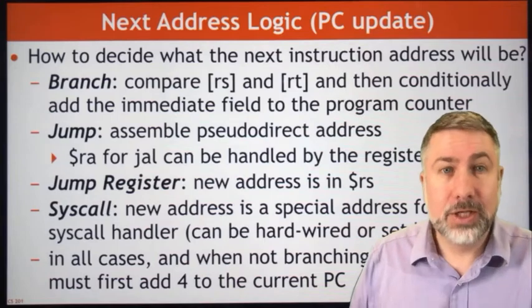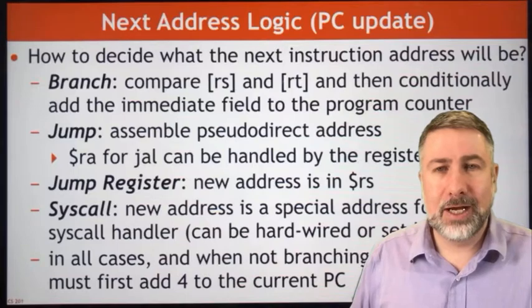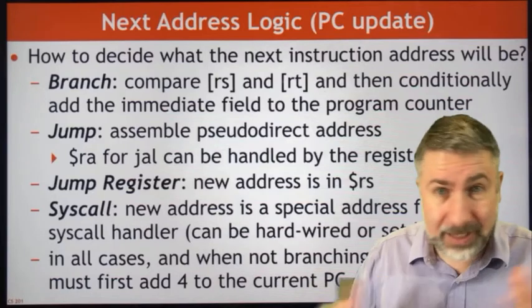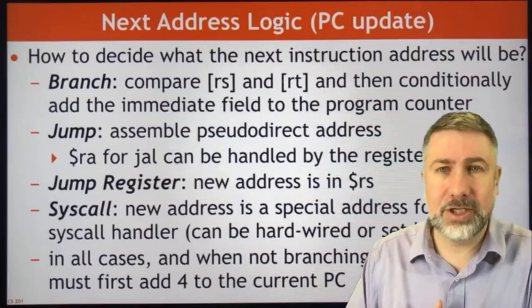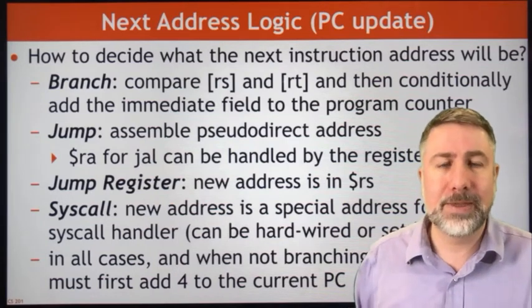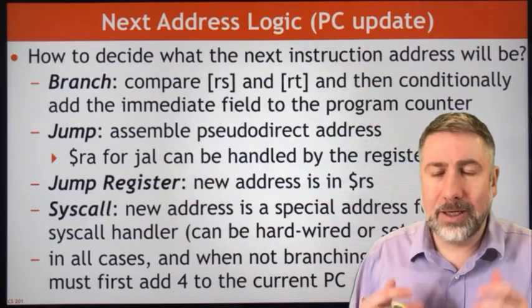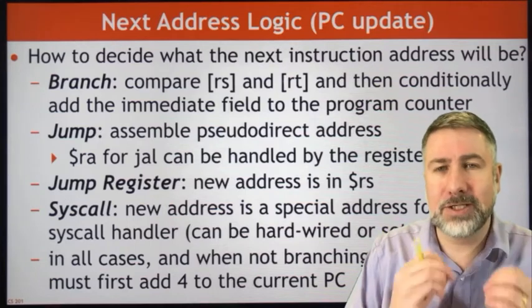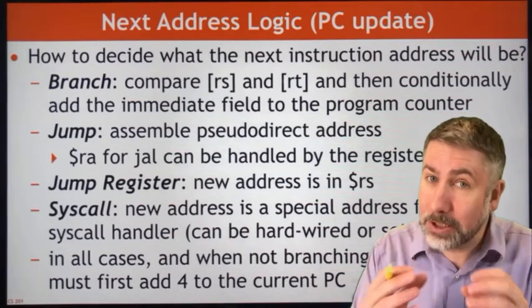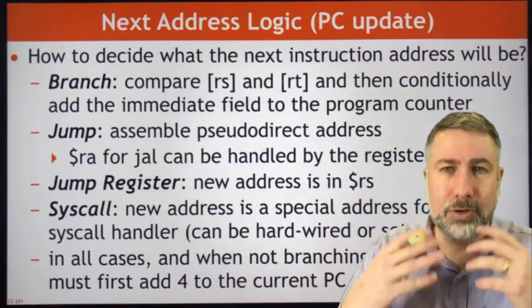Branches are conditional. Jumps are unconditional — we create a pseudo-direct address based on the jump instruction, but we need hardware to do that. The JR instruction allows us to jump to the address stored in register RS. And syscall is the fourth way to change the program counter — it puts a special address into the program counter, the address of an operating system response routine. We don't know exactly what that address is, but we need a register or hardware to hold it, and that puts a new address into the program counter.